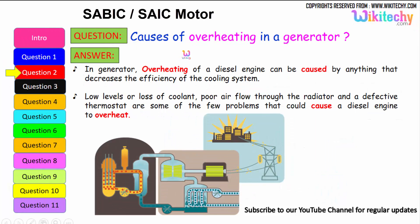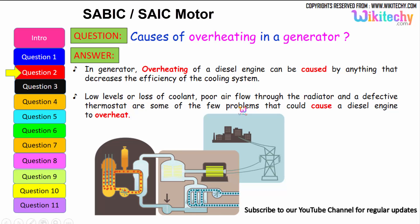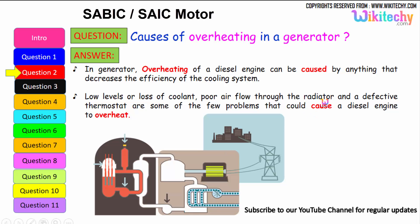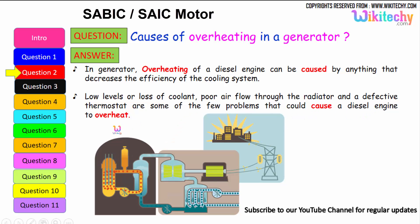Let's move on to the next question: causes of overheating in a generator. Overheating of a diesel engine can be caused by anything that decreases the efficiency of the cooling system. It can be due to loss of coolant or low levels of coolant, poor air flow through the radiators, and a defective thermostat — these are some of the problems that could cause a diesel engine or generator to overheat.